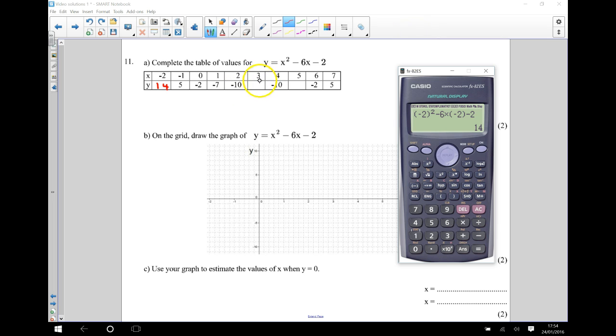Now the next one over here is 3, so I'm going to do 3 squared, take away 6 times 3, take away 2. And that gives me negative 2.